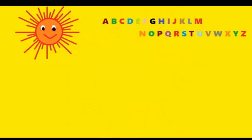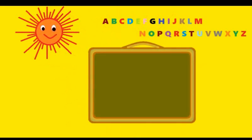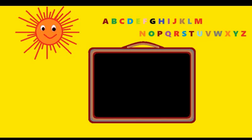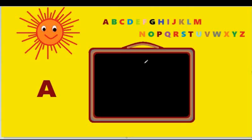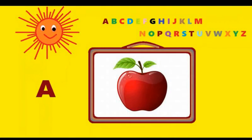Hello kids, today we are going to learn how to write ABCD in uppercase, how to write ABCD in capital letters. Let's start with A. We have to start from the top, come down the mountain, and from the same point come down the mountain again and across the street. We have to take a line from right to left, and from the same point take a line from left to right, and draw a sleeping line between. A is for Apple.